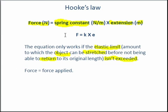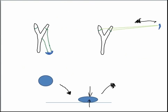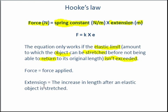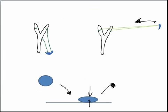The force is essentially the force applied. So if we were thinking about our catapult, it would be the amount of force needed to pull the catapult back. The extension is the increase in length after the elastic object is stretched. So going back to our catapult, the extension would be this increase in length here — how far, how long the elastic is after being stretched.